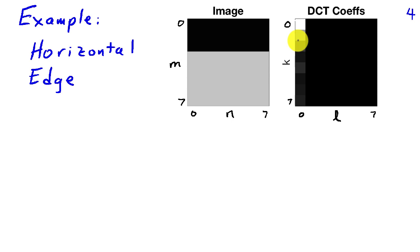And if we take the DCT coefficients of this image, we find that they're all concentrated in the l equals 0 or along the vertical frequency direction. So they have 0 horizontal frequency, which is consistent with the fact there's no variation in this image in the horizontal direction.